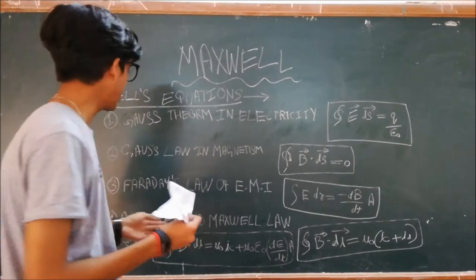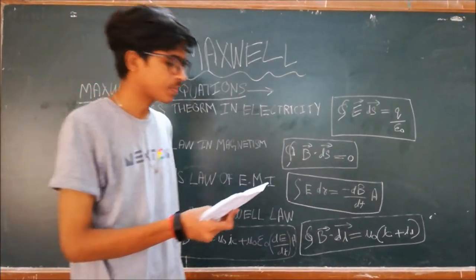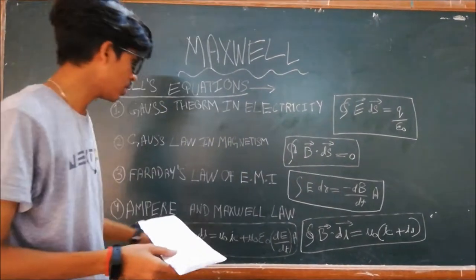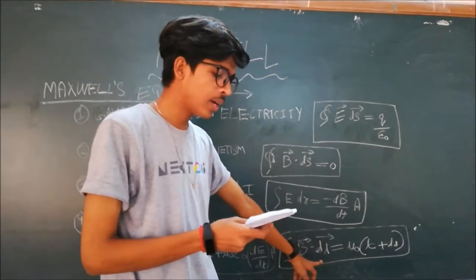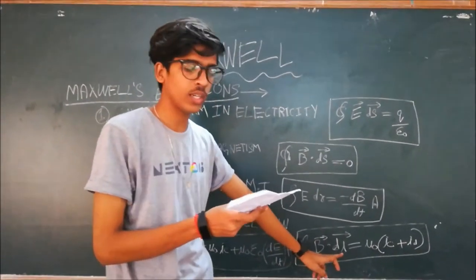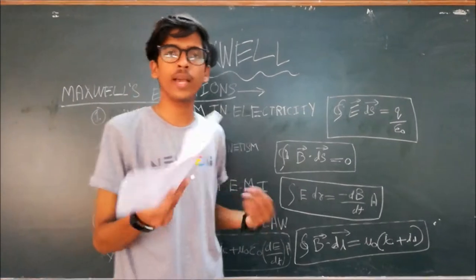The fourth equation is explained by Ampere and Maxwell's law, which is given by this. Where, in which change in electric field changes the magnetic field.